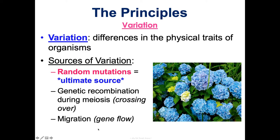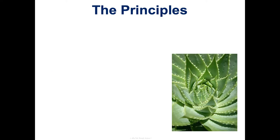Migration — from an evolution and genetics standpoint known as gene flow — also creates variation. When new organisms move in and reproduce with local organisms, they introduce new genes. For example, before European colonization of America, the indigenous people lived here, and then we introduced all these different genes from the other side of the Atlantic, which created a ton of variation. So variation is key.